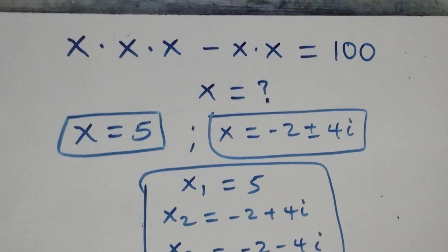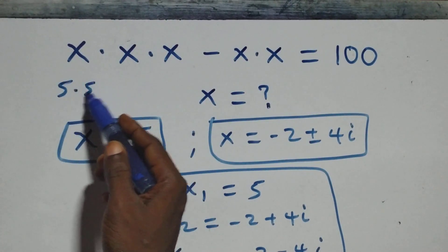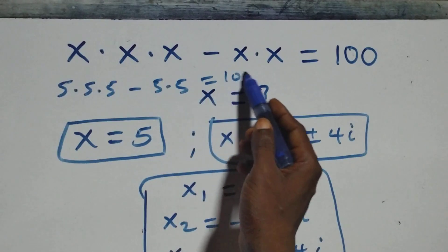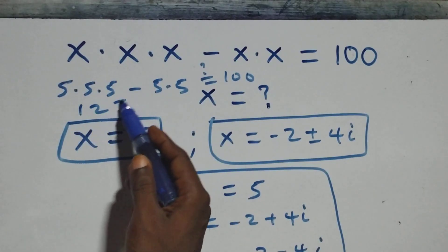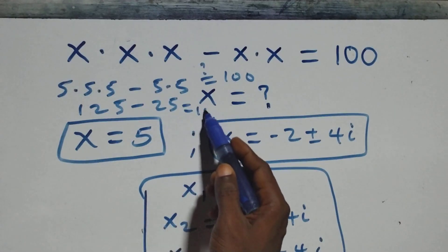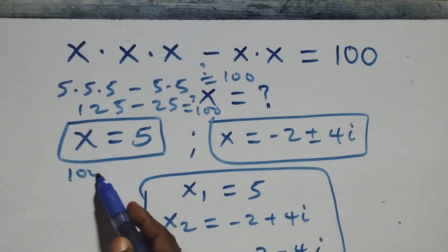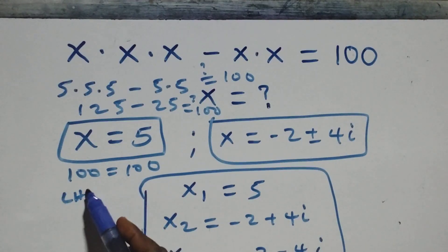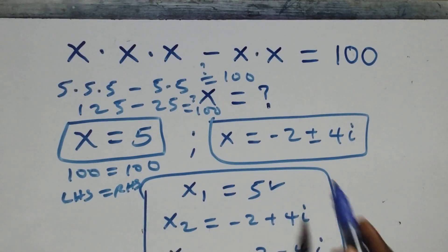We substitute x equals 5 to verify: 5 times 5 minus 5 times 5 on the right side equals 100. And 5 times 5 times 5 is 125, minus 5 times 5 which is 25, equals 100. So 125 minus 25 gives us 100, which equals 100. Left-hand side equals right-hand side — x equals 5 satisfies the equation.